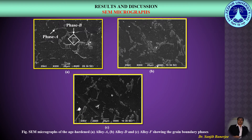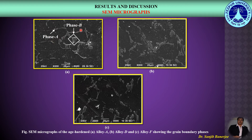Here we can observe the SEM micrographs of the age-hardened alloy A — the base 2219 aluminum alloy — then alloy D and alloy F, showing the grain boundary phases. From these SEM micrographs we can observe two different phases along the grain boundaries, indicated as phase A and phase B. Phase A is a uniform phase along the grain boundary region, chemically detected as CuAl₂ or theta phase by EDS analysis. Phase B has a blocky structure, segregated along the grain boundaries especially at the triple points, and is chemically detected as an intermetallic phase.